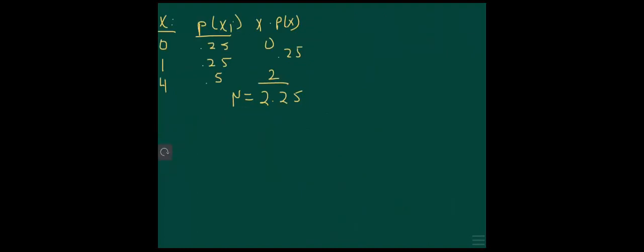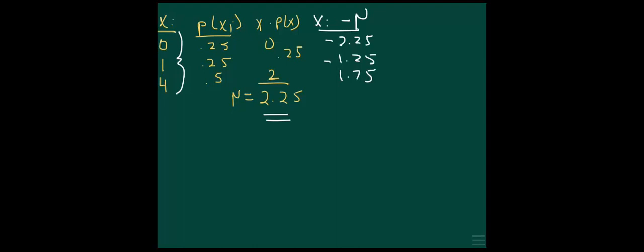So to get the variance, remember you're going to take individual values and subtract the mean. So we'll start with x sub i minus mu. Our mu is 2.25, and our x's are over here. So 0 minus 2.25 is minus 2.25. And then 1 minus 2.25 is minus 1.25. And 4 minus 2.25 is 1.75. So those are just our deviations.